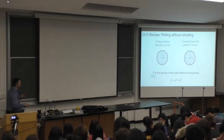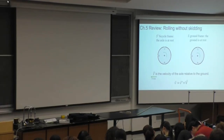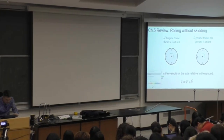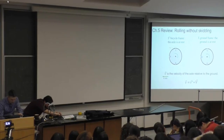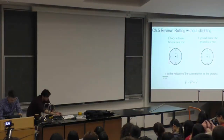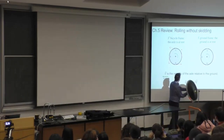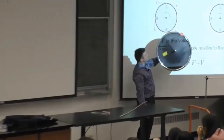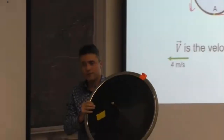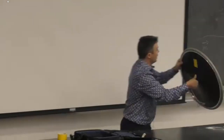You have two reference frames: the ground frame and the axle frame. In the bicycle or axle frame, the tangential speed at the top is to the left, at the right side it's down, at the bottom it's to the right, and at the left side it's up — it's simply rotating around like that. Points here are moving down, points here are moving to the right, points here are moving to the left. To get it rolling, you move the entire object along at 4 meters per second — you add 4 meters per second to all those vectors.